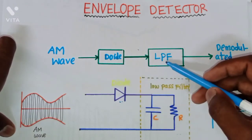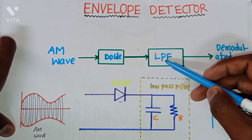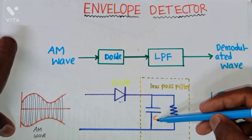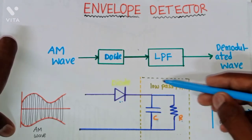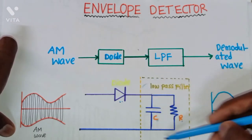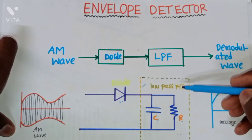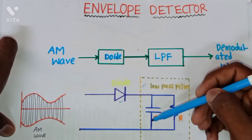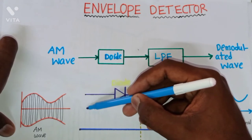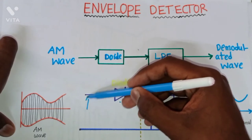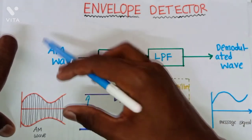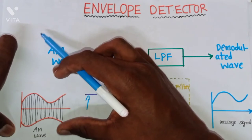The diode is equivalent to this symbol. The low-pass filter is nothing but the parallel connection of a capacitor as well as a resistor. This total block indicates the low-pass filter, and this is connected to the diode. This is the input — when we apply this AM modulated wave to the envelope detector circuit.